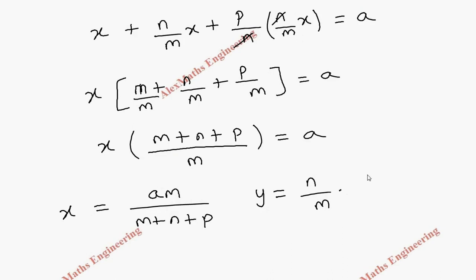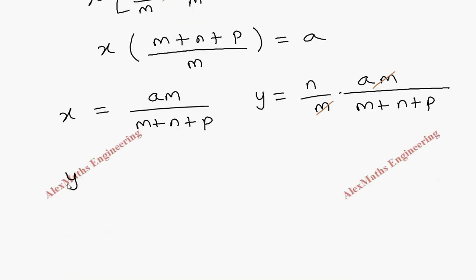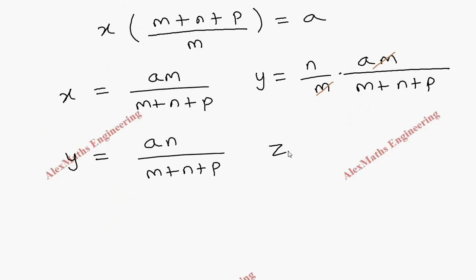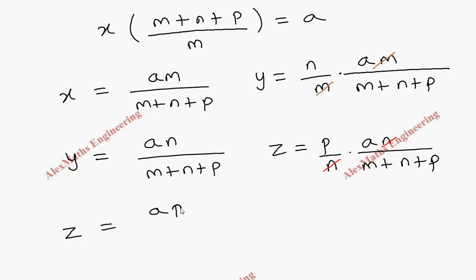Substituting x back: y = (n/m)·x = (n/m)·(am/(m+n+p)), and the m's cancel, giving y = an/(m+n+p). For z = (p/n)·y = (p/n)·(an/(m+n+p)), the n's cancel, giving z = ap/(m+n+p).